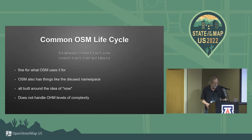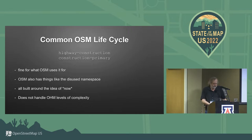The common OSM lifecycle is something like highway equals construction, construction equals primary, which is fine for what OSM uses it for. And then there's a disused namespace. Everything is referenced to now, and it's not a scheme that is reasonably extendable to covering genuinely complex historical mapping, so we have to look at other things.